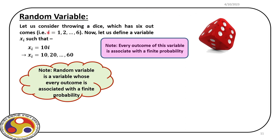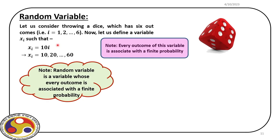If we denote the outcome by i, the possible values are 1, 2, 3, 4, 5, 6. For every outcome, we define a variable x_i — let us take x_i = 10i — giving possible values 10, 20, 30, 40, 50, 60, each with associated probability 1/6. Since x_i has distinct values each with an associated probability, we call x_i a random variable.